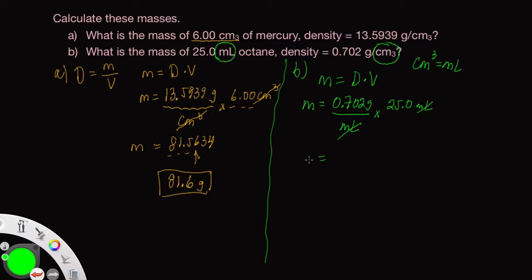And let's see what we get on our calculator. Initially we get 17.55 units of grams, but we'll deal with that in a second.